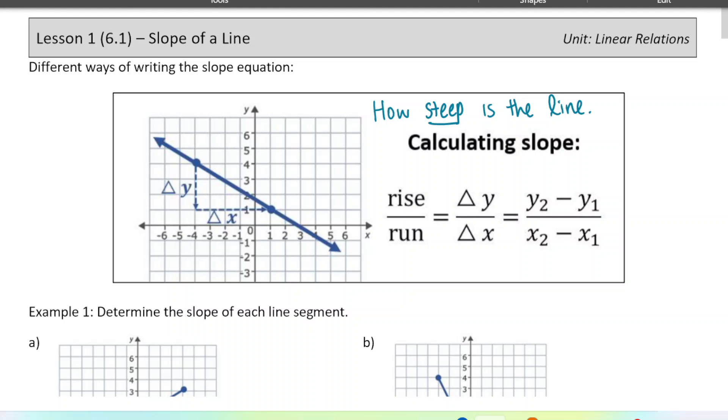If a line is going up as you read it from left to right, you have a positive slope. And if you have a line that's going down as you read it from left to right, it's a negative slope. Let me show you that on the side here.